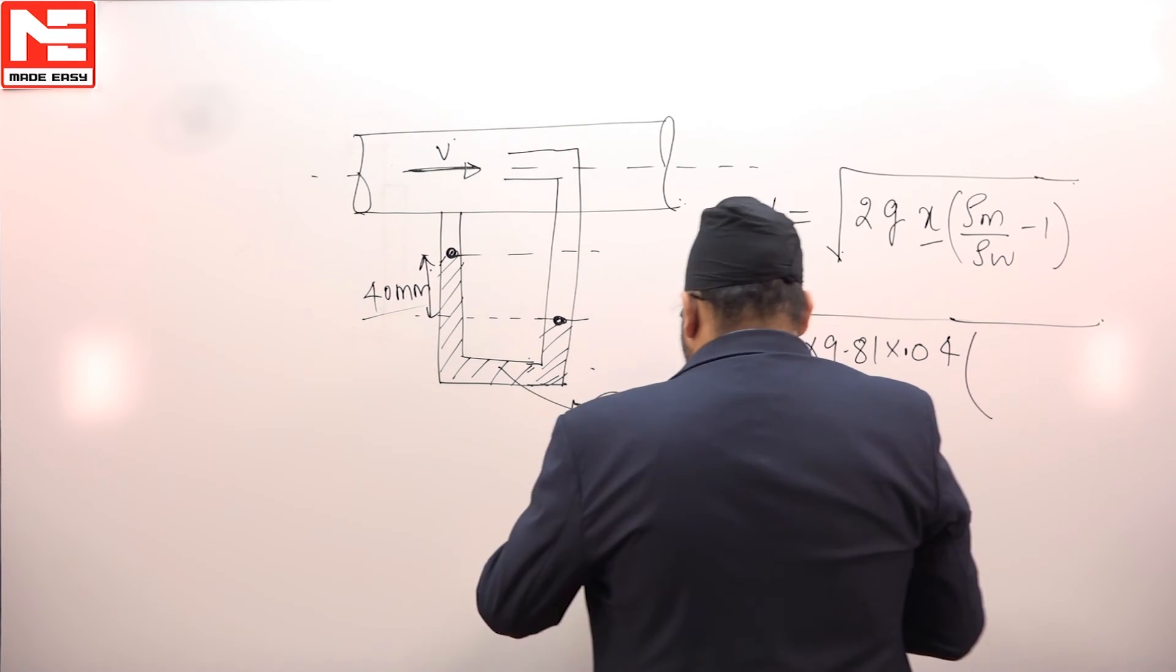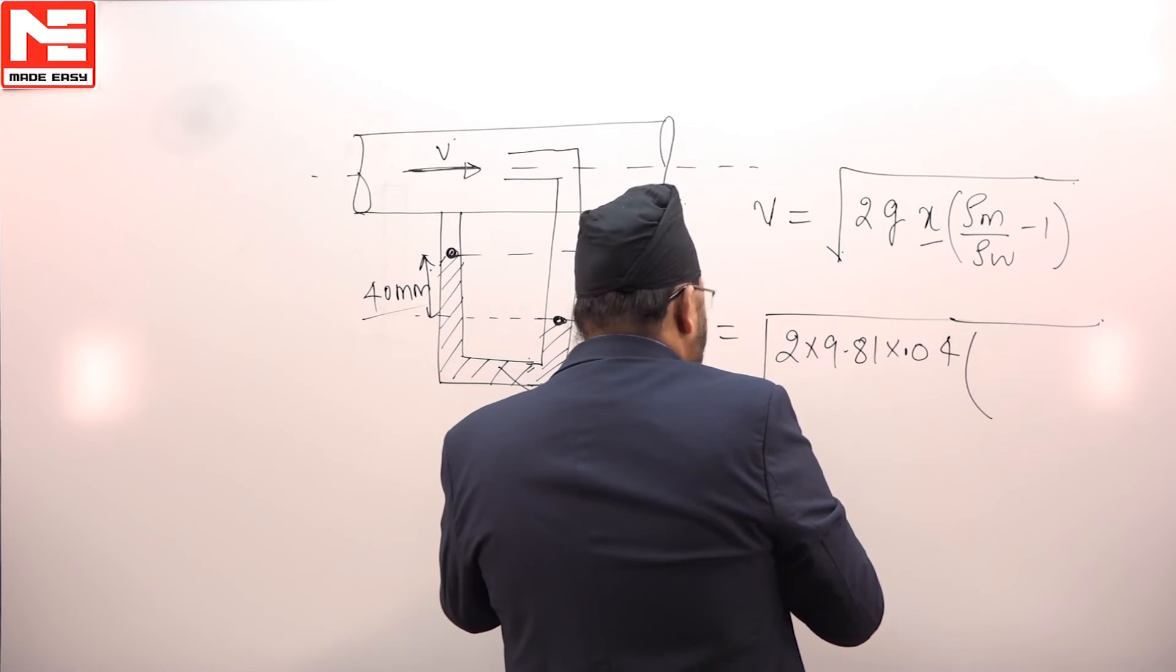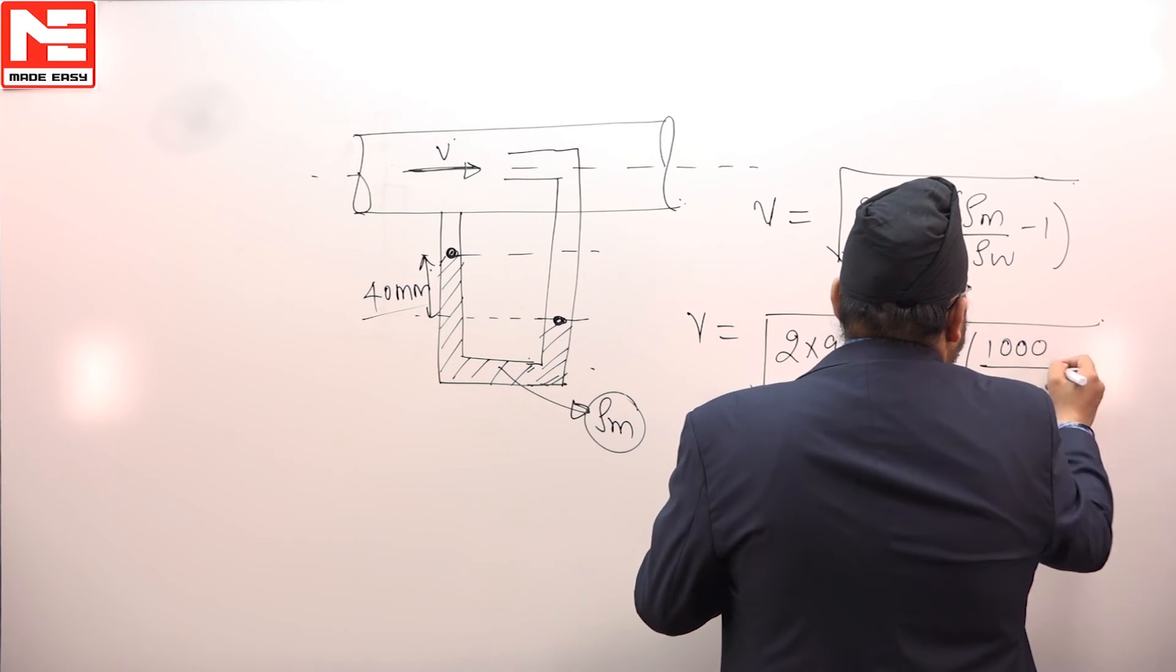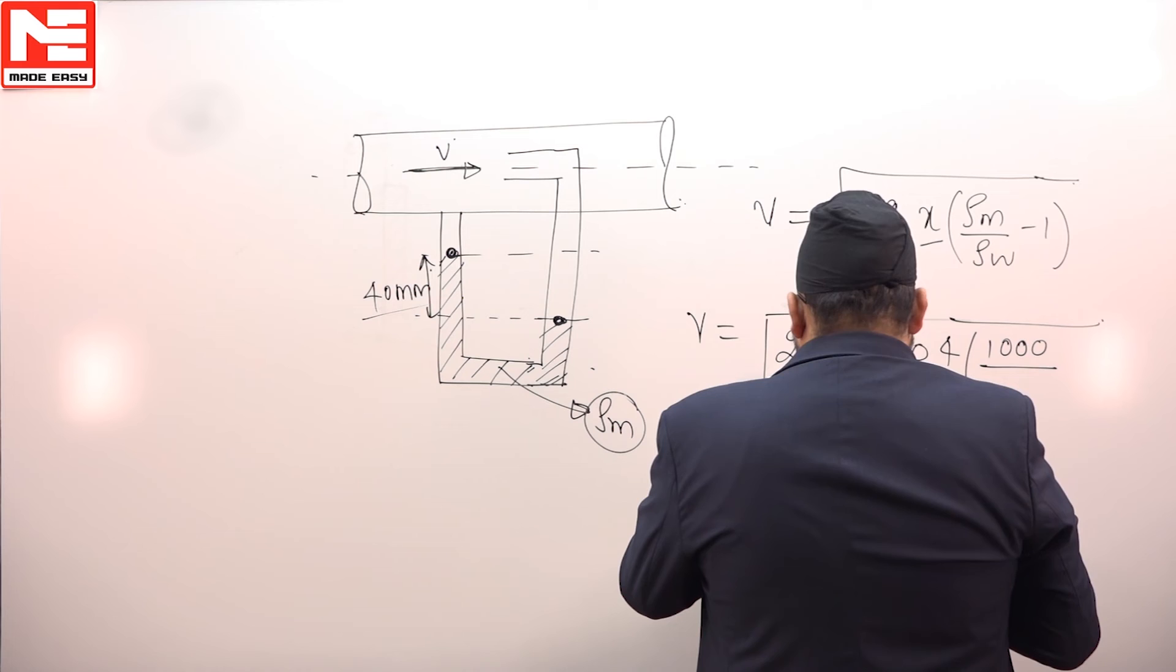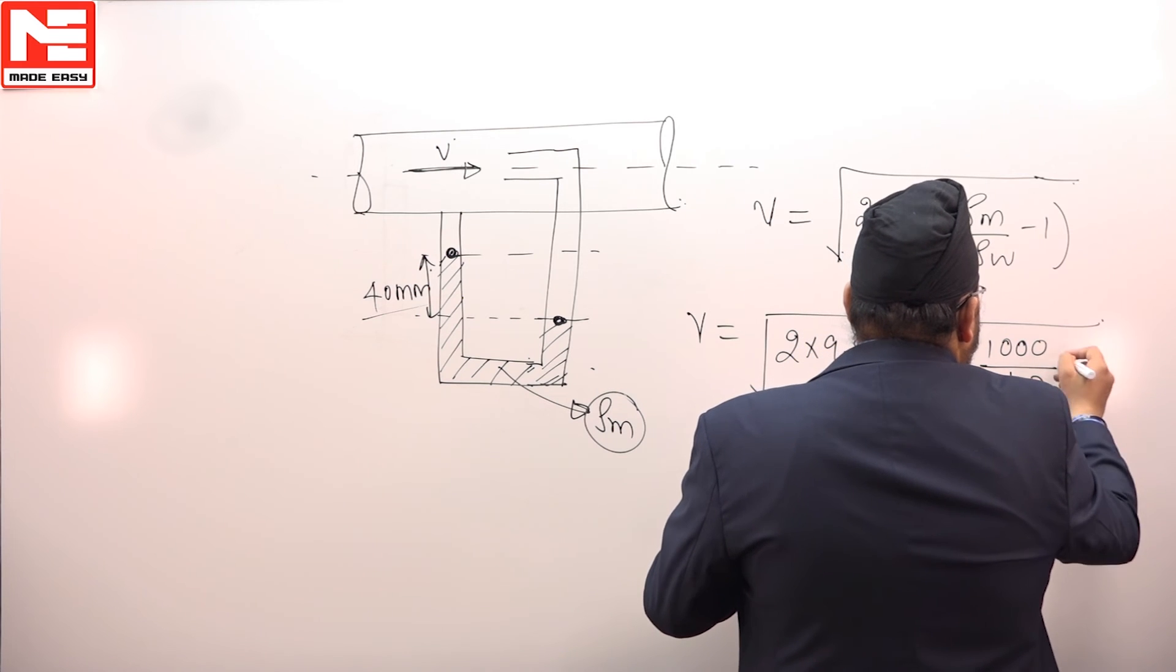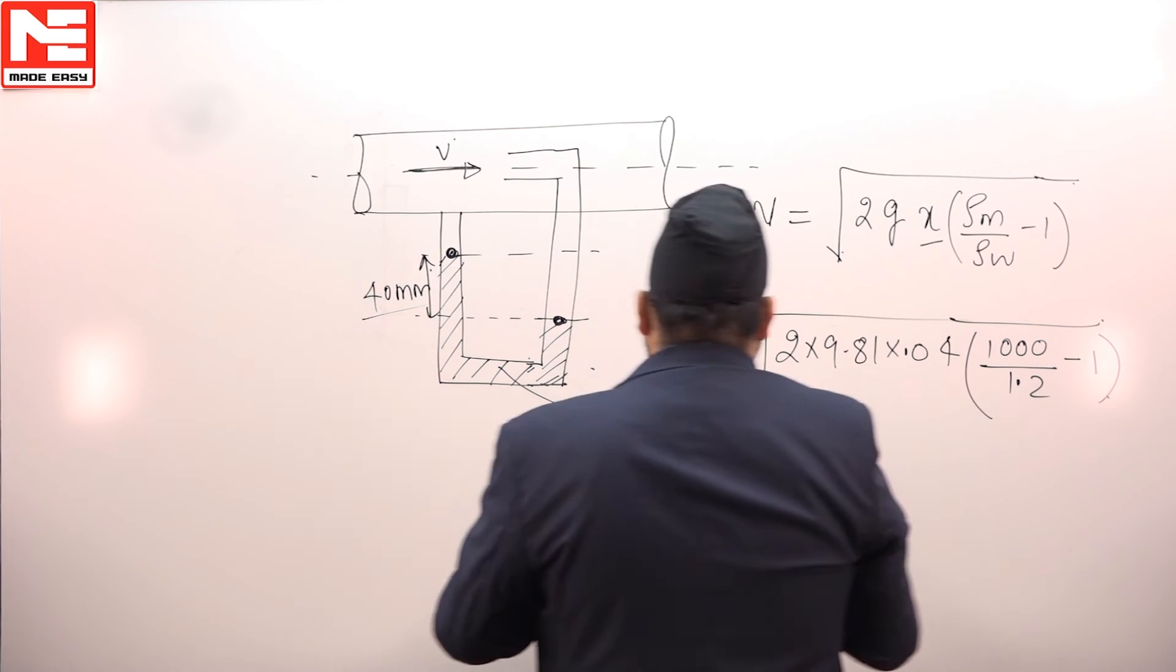Rho m, what is density of manometric fluid? Manometric fluid is water, so it will be 1000 and working fluid is air, so density of air is 1.2 minus 1.